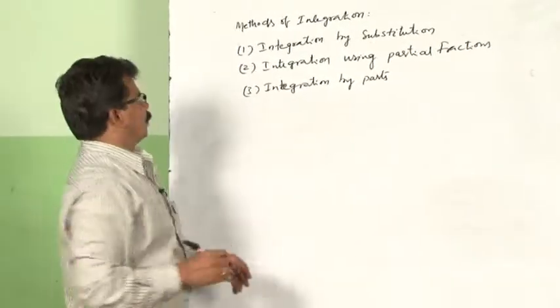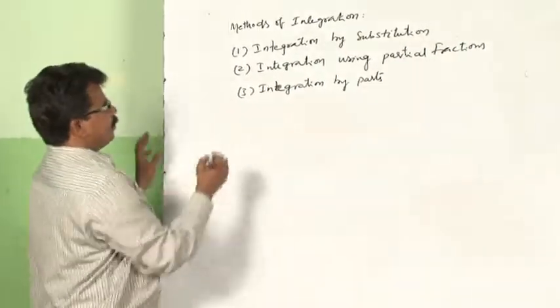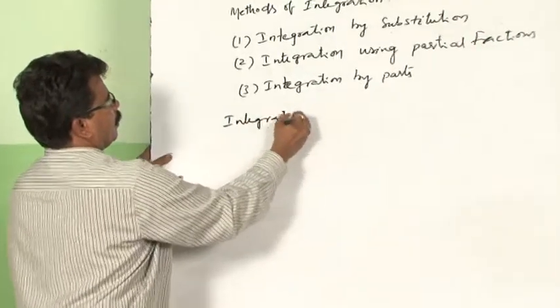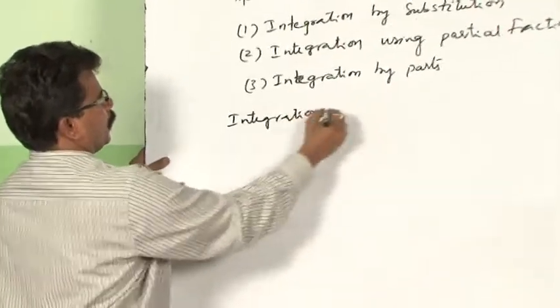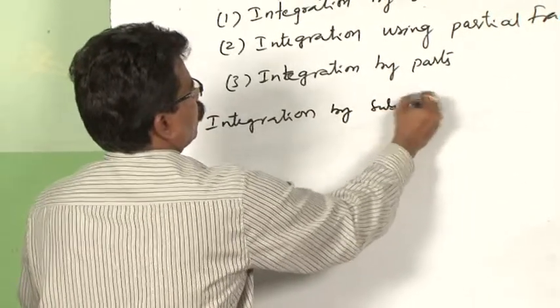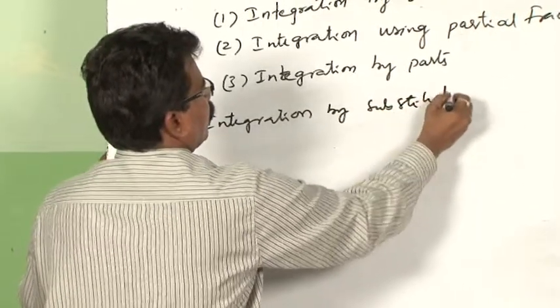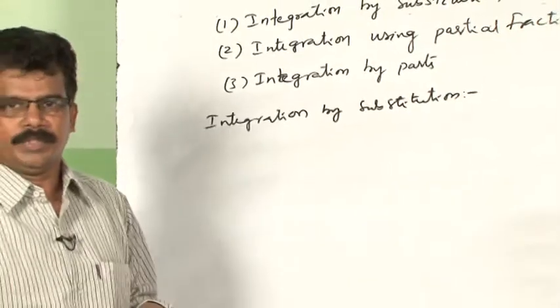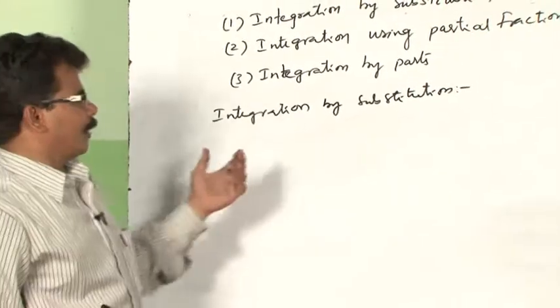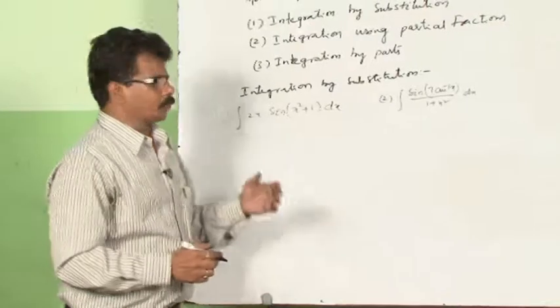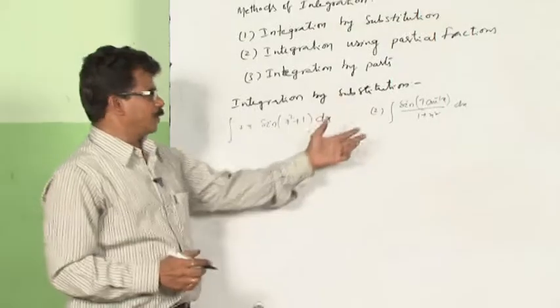First, let us discuss one by one. First one is integration by substitution. In this method of integration by substitution, we take a suitable function for finding the integration of the given function. We find a suitable function to find the integration of the given function. In the substitution method, let us solve some 3 questions.